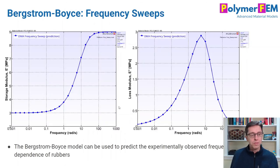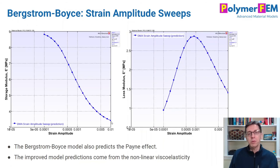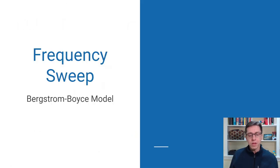With just two terms — basically two Prony series terms — the BB model can capture both frequency sweeps and amplitude sweeps, including the Payne effect, using a nonlinear viscoelastic representation. The frequency sweep shows storage modulus going from a low to high value and loss modulus peaking and dropping off, just as seen experimentally. In the strain amplitude sweep, storage modulus starts high then drops off rapidly — that is exactly the Payne effect — and you get this for free with the BB model.